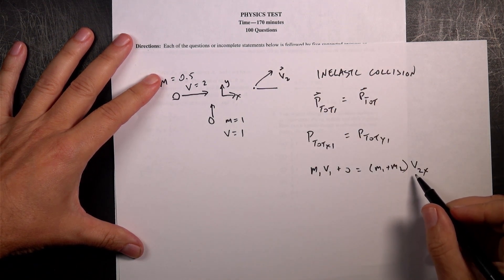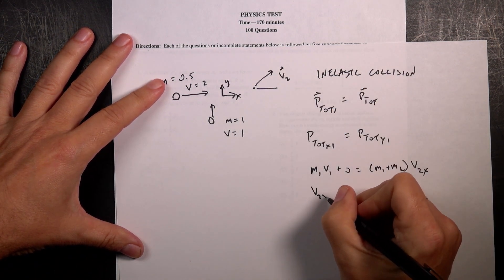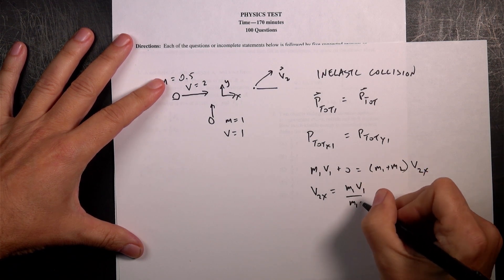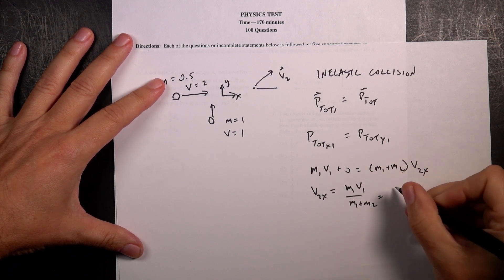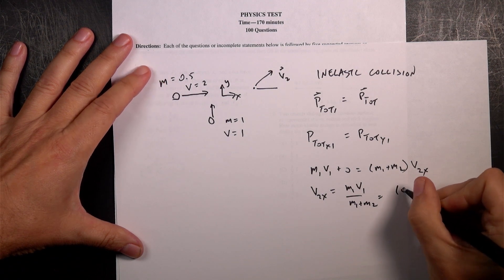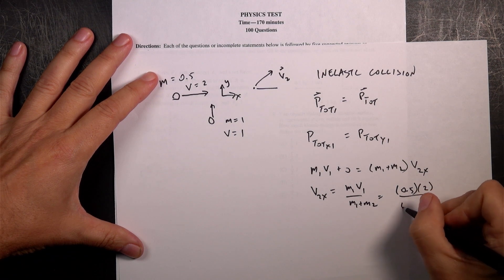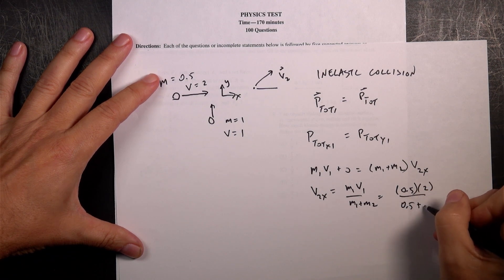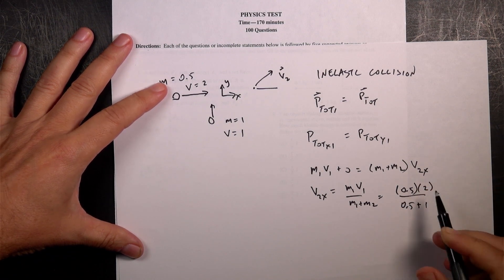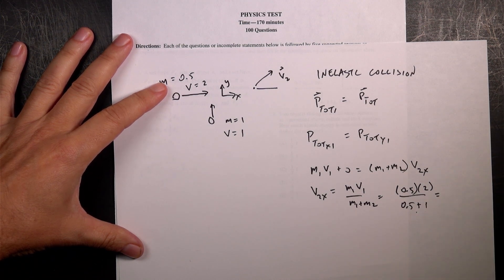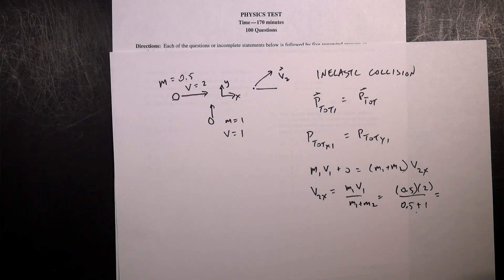And I actually can solve for that right now. So V2X is going to be M1 V1 over M1 plus M2. And since I know the numbers, that's going to be 0.5 times 2 over 0.5 plus 1. So it's going to be 1 over 1.5. So 1 divided by 1.5 is 0.3. Is that right?